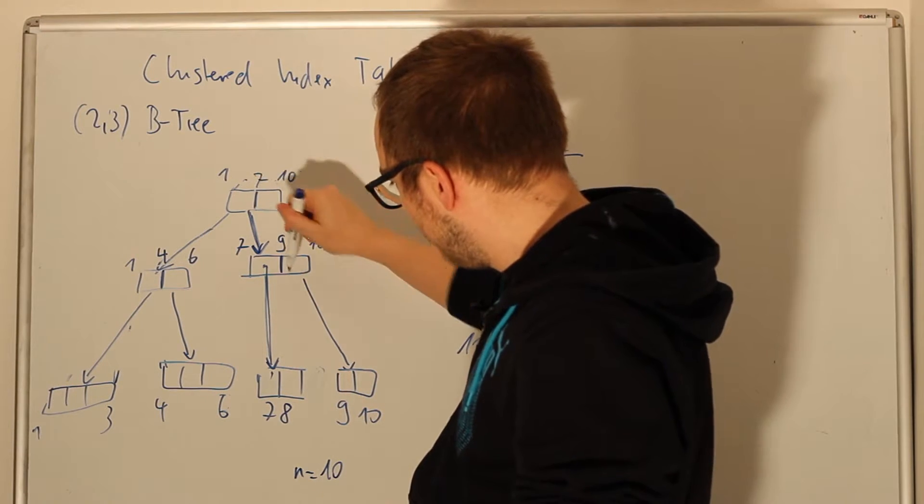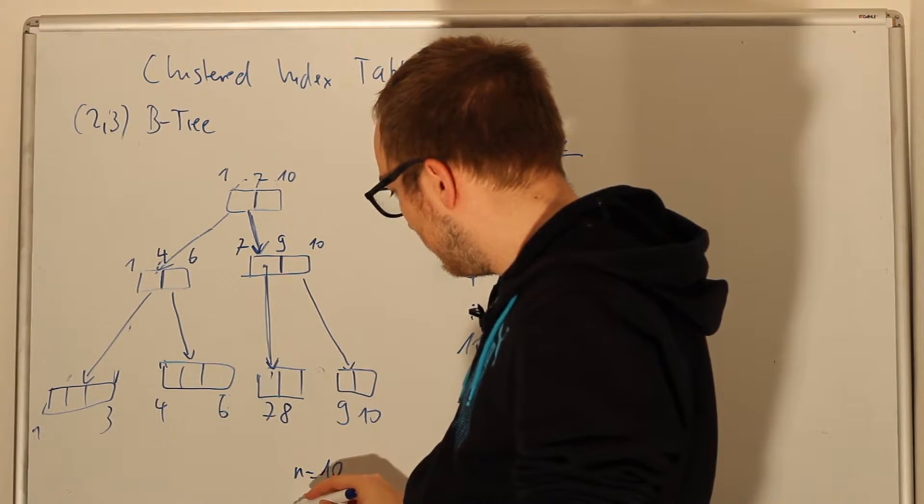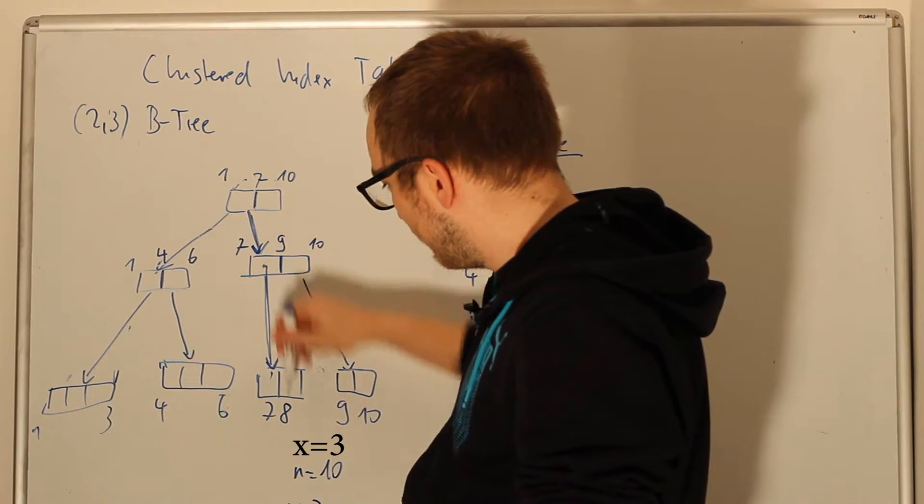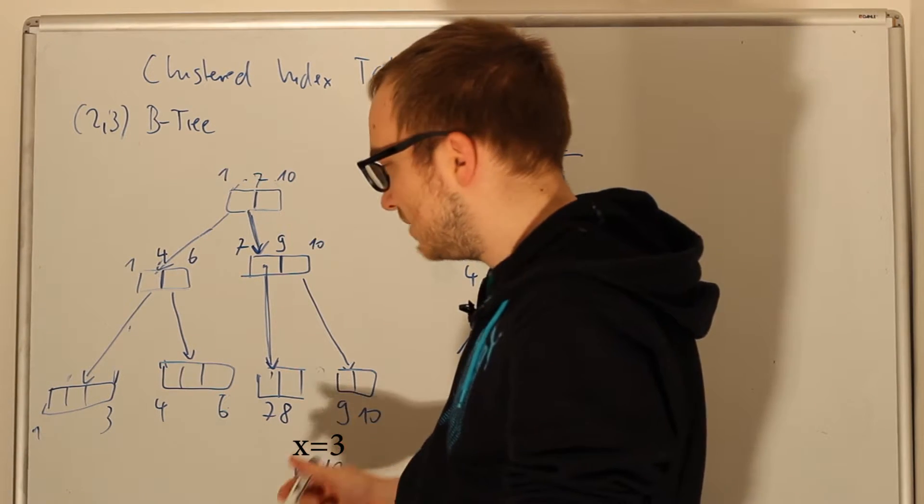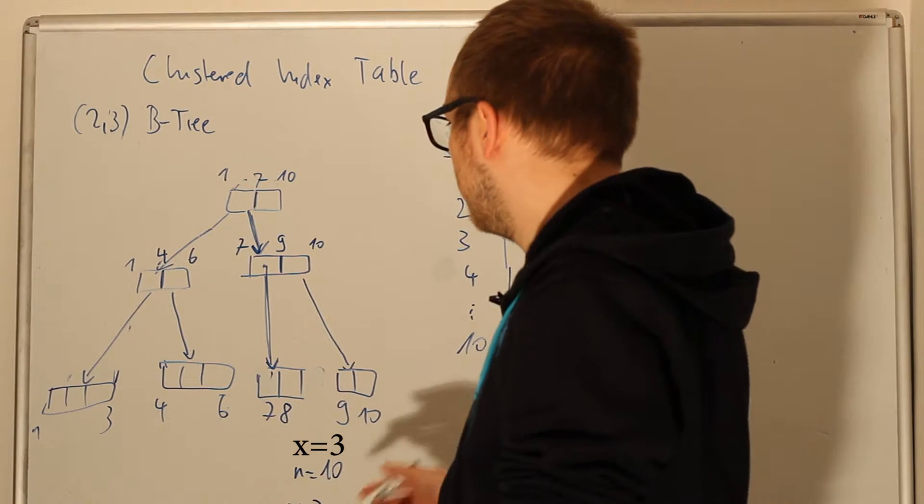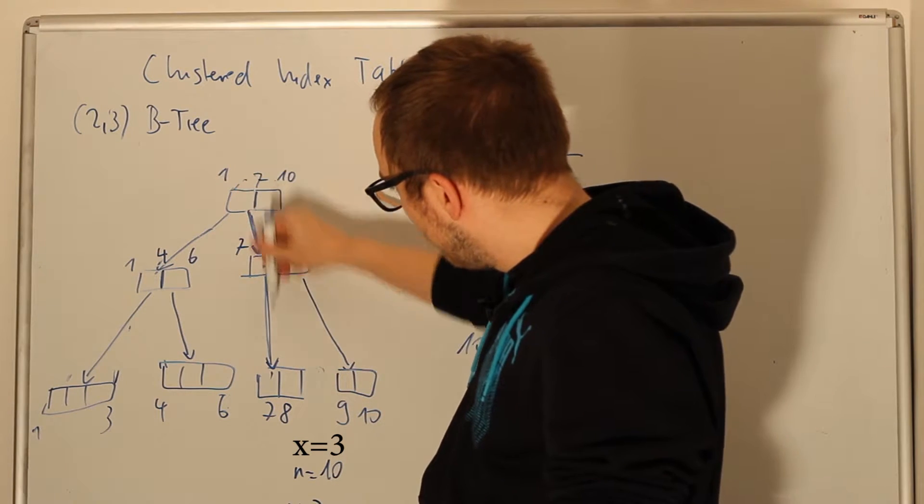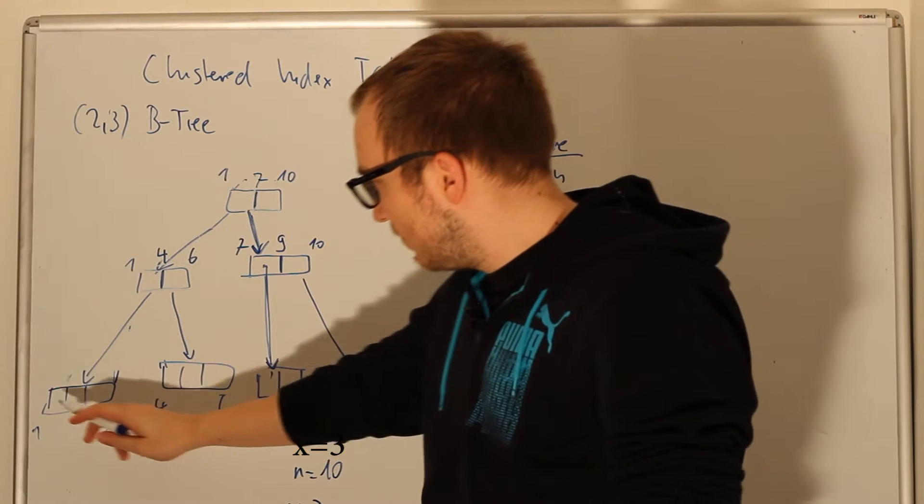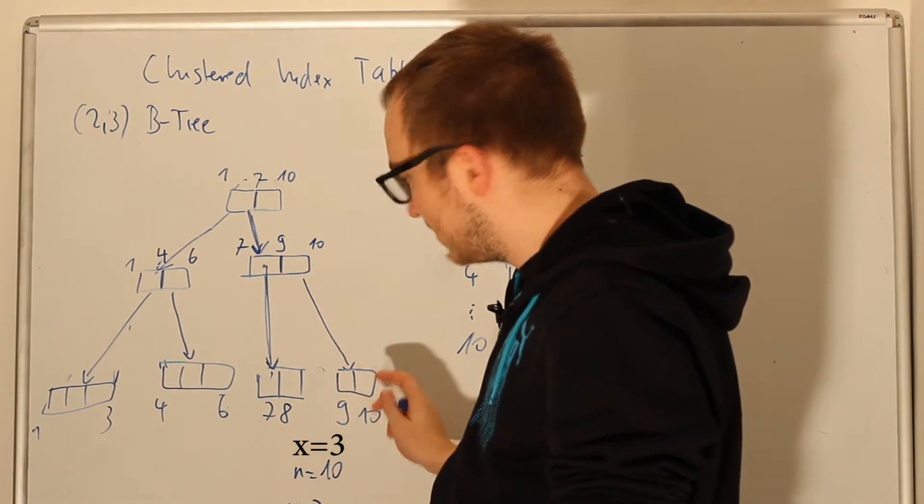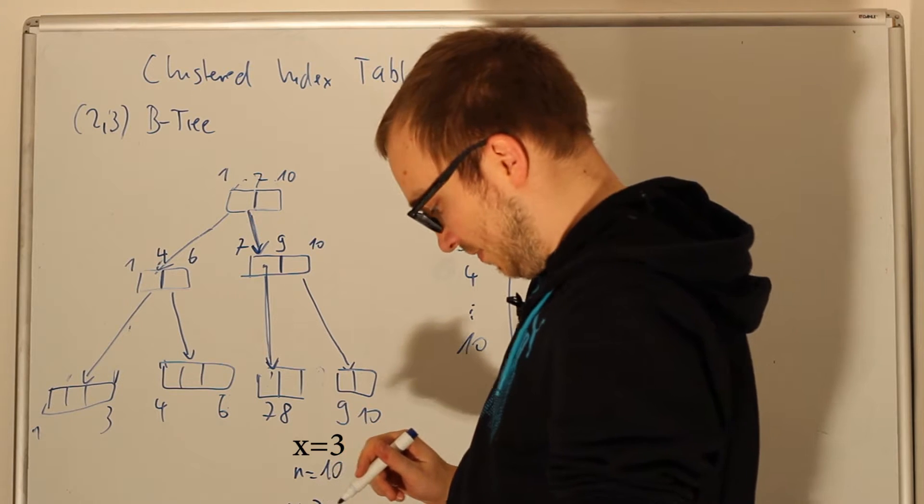Although we have 10 elements (n equals 10), we only needed 1, 2, 3 times to look for a node. We didn't have to look over all 10 items. This is very easy: 1, 2, 3 and we found the 7, instead of 1, 2, 3, 4, 5, 6, 7 and so on. This is the basis of a B-tree.